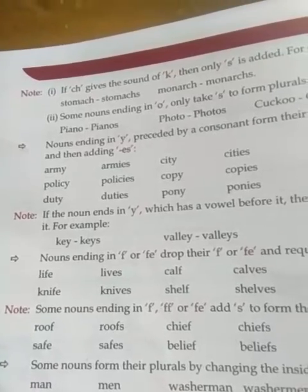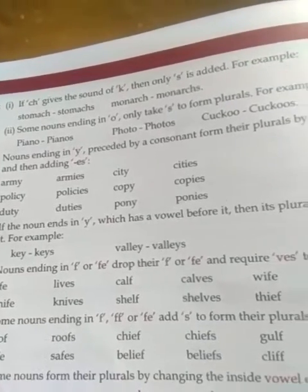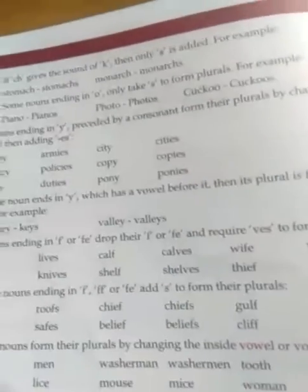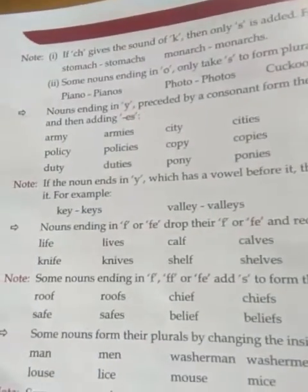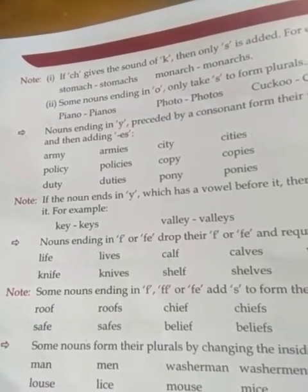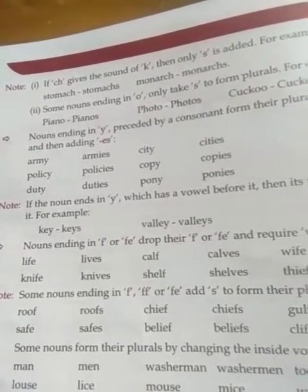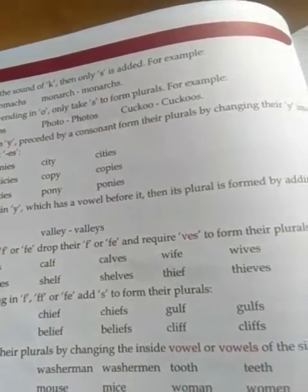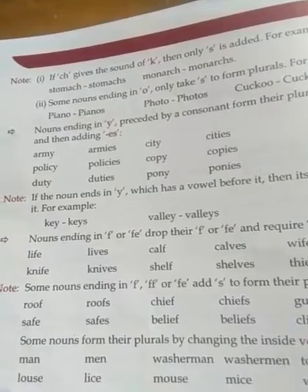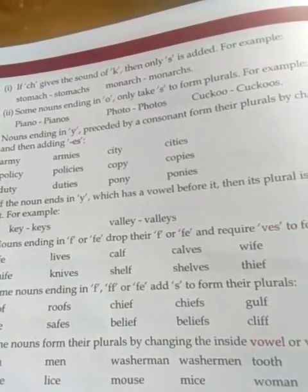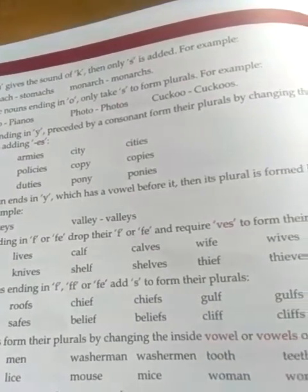Some nouns form their plural by changing the inside vowel or vowels of the singular. For example: man → men (where 'a' changes to 'e'), washerman → washermen, tooth → teeth, louse → lice, mouse → mice.